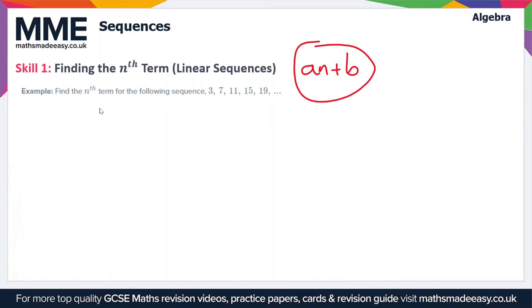So in this example we have to find the nth term for the sequence 3, 7, 11, 15, 19 and so on. And so to find the nth term the first thing that we have to do is work out the value of a.